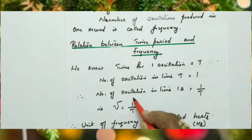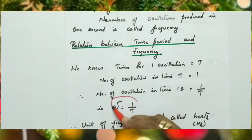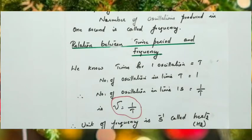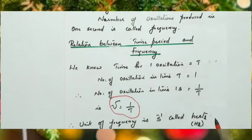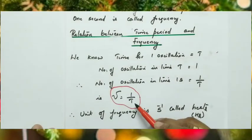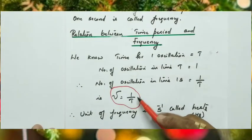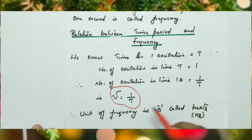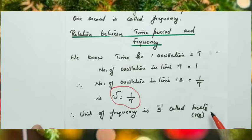The SI unit of frequency is second raised to minus one (s⁻¹), since it equals 1/T. This unit is called hertz. So the SI unit of frequency is hertz.